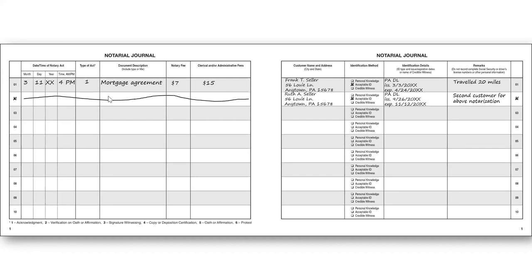Question from Marissa: are there stipulations about what type of ink to use in your journal? There are not. My recommendation is to use permanent ink — don't use something that can be erased. Use a color like black or blue that could easily be photocopied if anyone ever requested a copy of your journal, because the state can do that. Colors like pink, green, and yellow are probably not your safest bets.